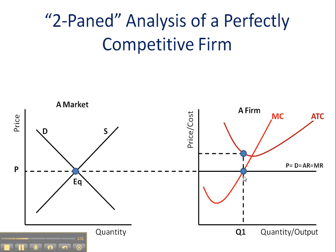Further, how do I know that? Once I find my profit-maximizing rate of output at MC equals MR, which is this point here at Q1, I have to actually move up to find out what my total costs are. The total costs are found here at this particular point, and they're well above my selling price. So this red-shaded area here represents a firm operating at a loss.